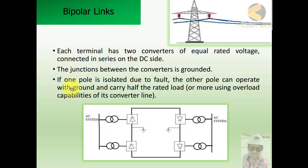The junction between converters is grounded. This is the ground. If one pole is isolated due to fault, for example this pole is isolated, the other pole can operate with ground and carry half the rated load or more using overload capabilities of its converter line.